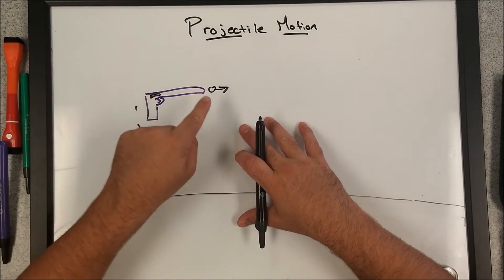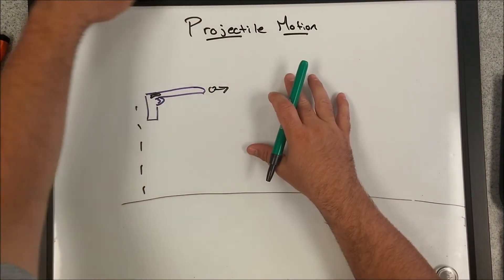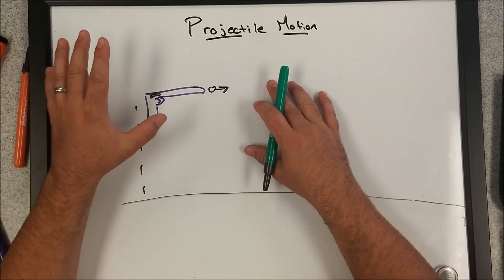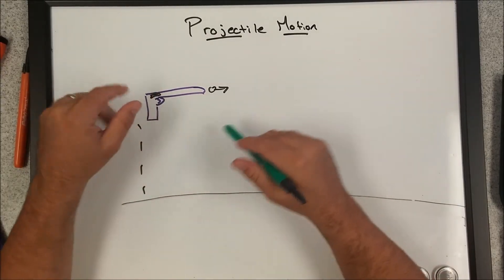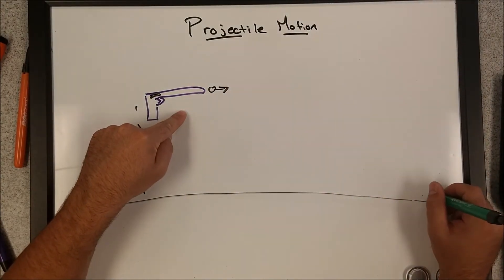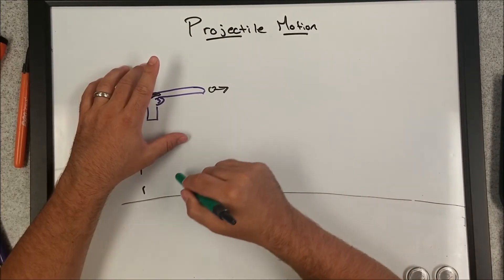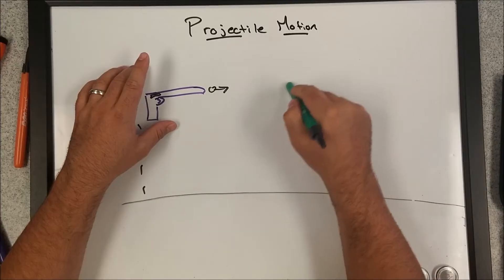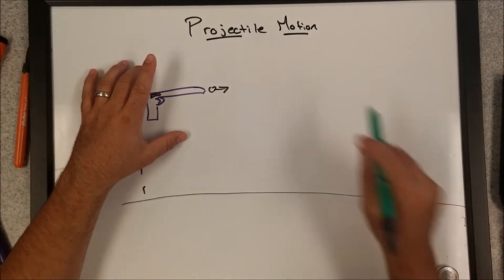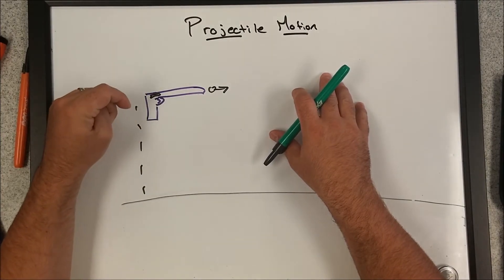Think about it — will it be the bullet or the shell? Remember, in free fall, mass has no effect, so they will be falling as a result of the acceleration due to gravity in the same capacity. A lot of students say the bullet will hit the ground first because it's traveling super fast through the air. The majority say the other way around — that the bullet is going to hit the ground significantly later than the shell because it's going so fast. I'm telling you both of those are completely wrong. It is the third option — kind of a trick question.